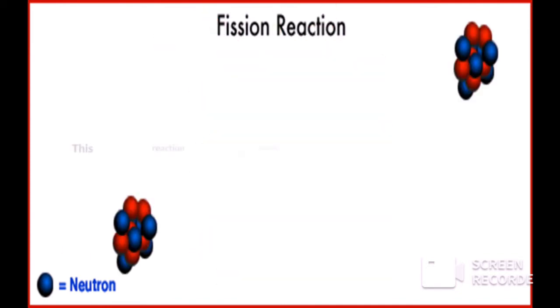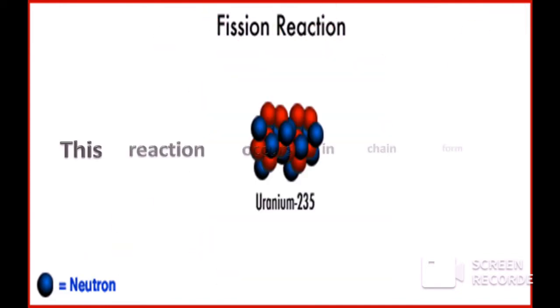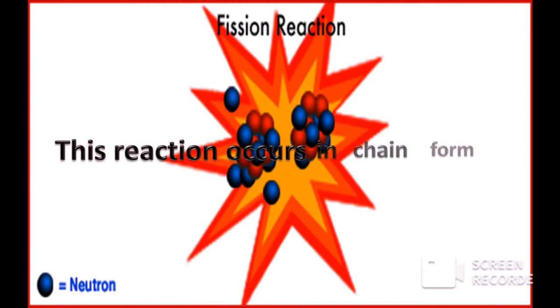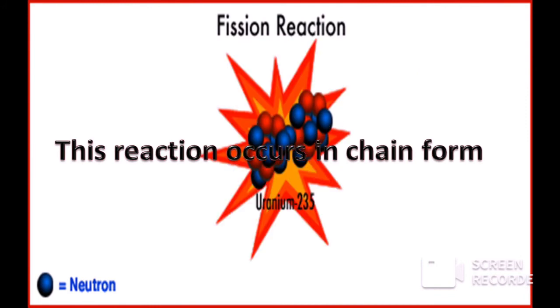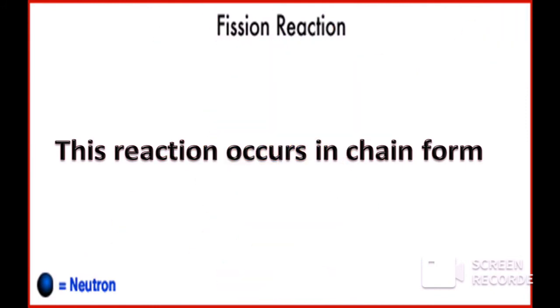Uranium-235 bombarded with neutron undergoes a chain reaction. This reaction occurs in chain form, hence uncontrolled.